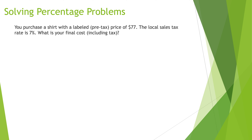What's the final cost if the pre-tax price is $77 and the local sales tax rate is 7%? There are a few ways to do this. One way is to take 77 and add to it 7% of 77, but there's a slightly easier approach.